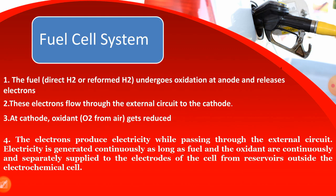In the fuel cell system, the fuel undergoes oxidation at the anode and releases electrons. These electrons flow through the external circuit to the cathode, where the oxidant gets reduced. The electrons produce electricity while passing through the external circuit. Electricity is generated continuously as long as fuel and oxidants are continuously and separately supplied to the electrodes of the cell.